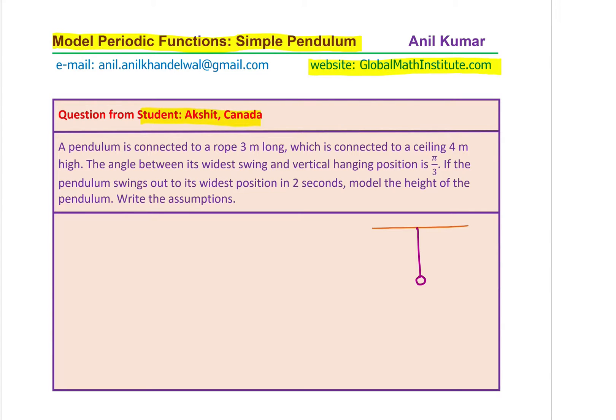Now, it is given to us that from the ground, the height of the ceiling is how much? The length of this pendulum is 3 meters and the height is 4 meters of the ceiling from the ground. That means in the given position, the height from the ground will be 1 meter. 1 meter is this particular height.